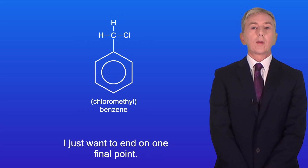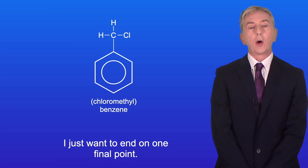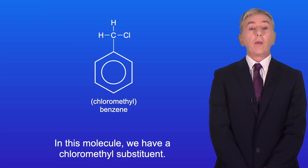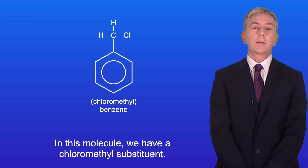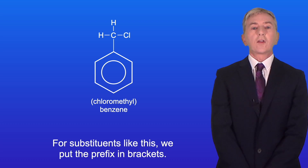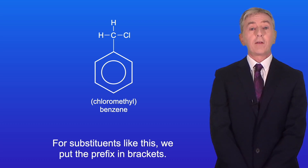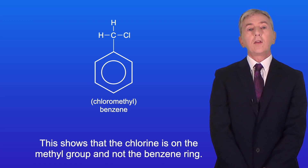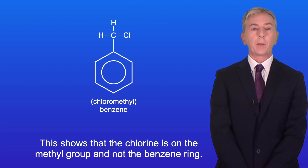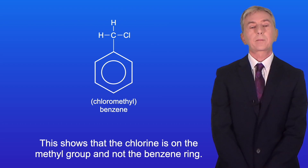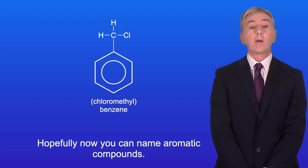One final point: in this molecule we have a chloromethyl substituent. For substituents like this, we put the prefix in brackets. This shows that the chlorine is on the methyl group and not the benzene ring. So hopefully now you can name aromatic compounds.